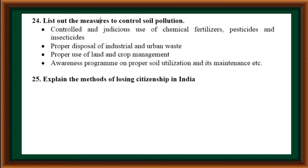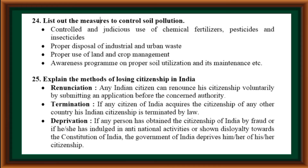Explain the methods of losing citizenship in India. First, renunciation: any Indian citizen can renounce citizenship voluntarily by submitting an application before the concerned authority. Second, termination: if any citizen acquires citizenship of another country, Indian citizenship is terminated by law. Third, deprivation: if a person obtained citizenship by fraud, engaged in anti-national activities, or shown disloyalty towards the constitution of India, the government deprives him or her of citizenship.